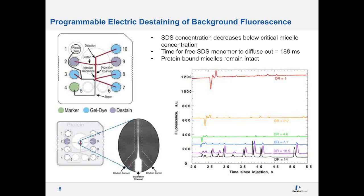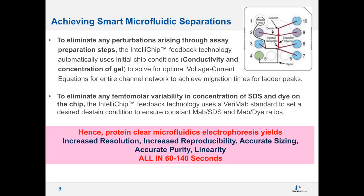This is shown in our experiments: when there is no de-stain, you can hardly see any peaks because the background is very high — around 1200. But as you keep applying more de-stain current and the de-stain ratio (DR) becomes higher, at a de-stain ratio of 14 you start seeing more peaks. This is the key innovation in this chip — you can dynamically create de-staining of the protein. There is no membrane, manual washing, or any manual steps; this is all automated. We can see the peaks and move towards resolving these proteins.